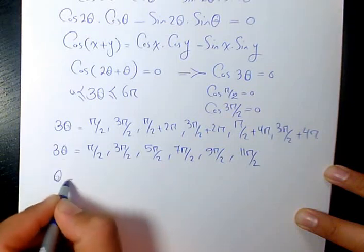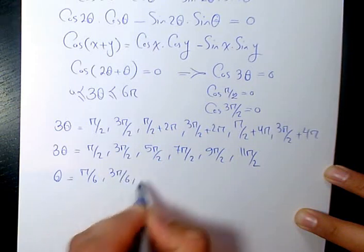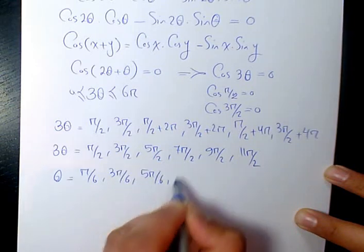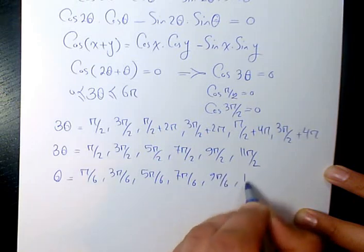Then finally I need to divide it by 3, it's going to be π/6, 3π/6, 5π/6, 7π/6, 9π/6, 11π/6.